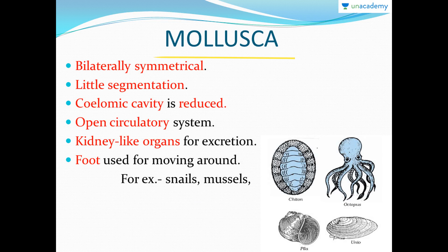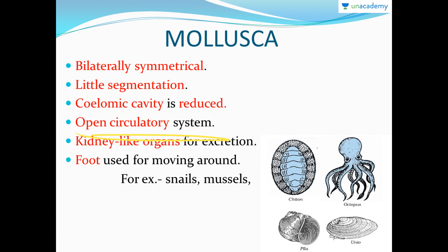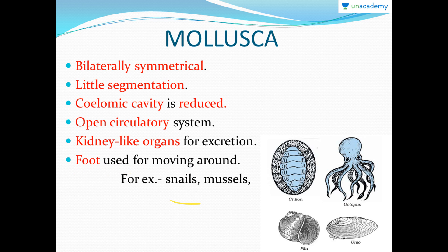Mollusca is also bilaterally symmetrical, but segmentation is reduced and the coelomic cavity is also reduced. They have an open circulatory system with no defined blood vessels. This group has kidney-like organs for excretion, which is a significant development. They use a foot for moving around. Examples include snails, mussels, and octopus.